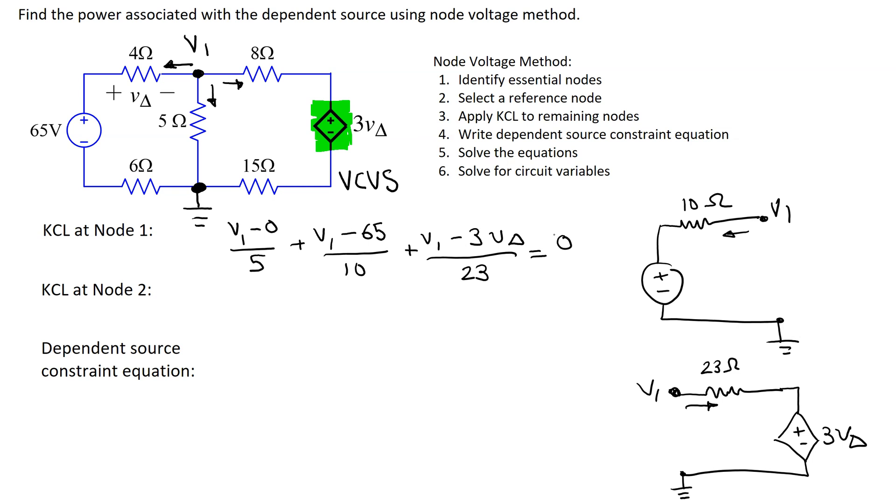In this circuit there is only one node so we only need to write KCL at one node. The next step is to write the dependent source constraint equation. What that means is we need to express this controlling variable V delta in terms of the node voltage V1.